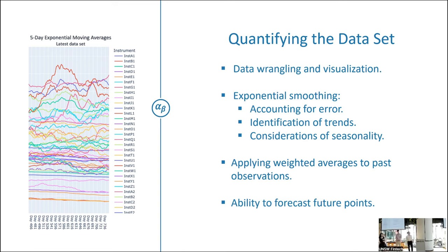Before talking about the strategy, like all the other teams, we had to look at the data first. This included data wrangling, visualisation, all the stuff we kind of like and don't like. We particularly looked at more simplistic approaches — we didn't want to overcomplicate things, given the relationship between the different instruments we were given. Taking that into consideration, we looked at exponential smoothing, error identification of specific trends, histograms, validating repetition, and any other patterns.